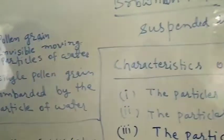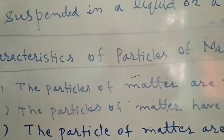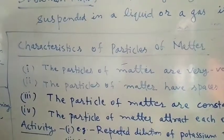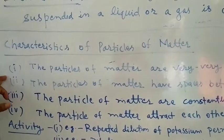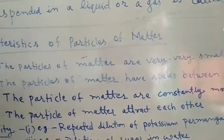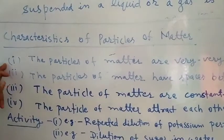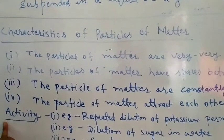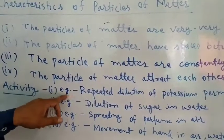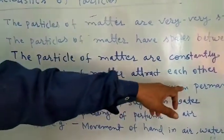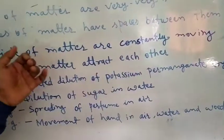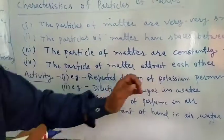Now we have to know about the characteristics of particles of matter. What are the characteristics of particles of matter? Particles of matter have four characteristics. The first one is that the particles of matter are very, very small. This can be proved by activities such as repeated dilution of potassium permanganate crystals in water or repeated dilution of copper sulfate crystals in water.